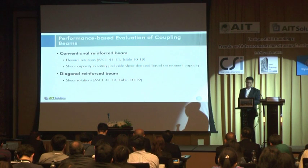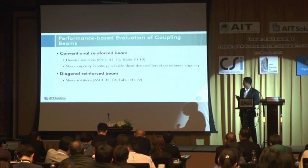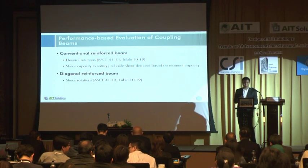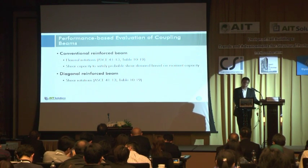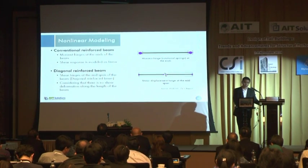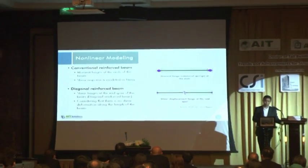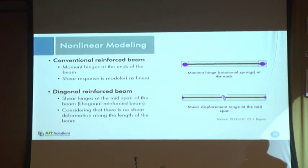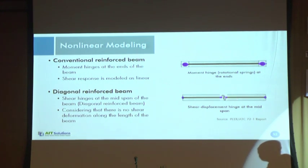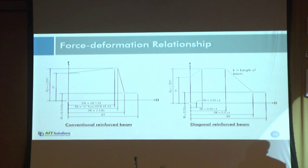In performance-based evaluation of coupling beams, we have to check rotations in the conventional reinforced beam and shear rotations in the diagonal reinforced beam. For the conventional reinforced beam, we check flexural rotations and shear capacity, with rotation limits from ASCE 41. For conventional reinforced coupling beams, we provide moment hinges at the ends of the beam. For diagonal reinforced beams, we provide a shear hinge at mid-span. The collapse prevention limit for conventional reinforced coupling beams from ASCE 41 is 0.04 radians. These are backbone curves for the conventional reinforced coupling beam and the diagonal reinforced beam — we will explain how to model these in detail in our workshop section.